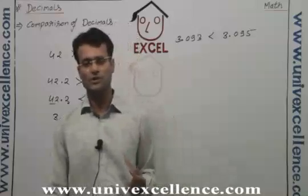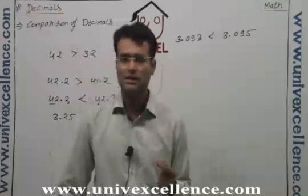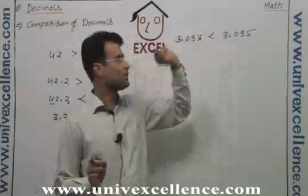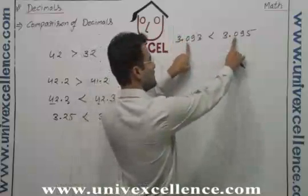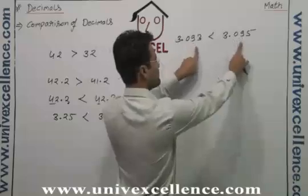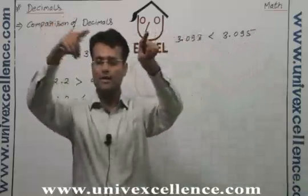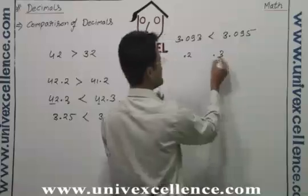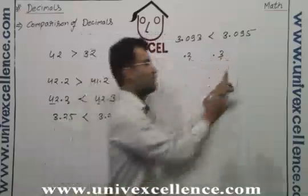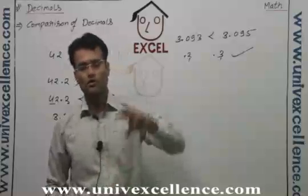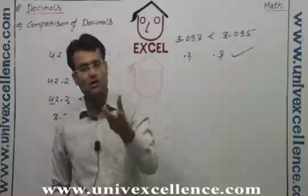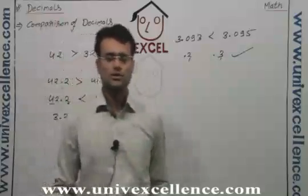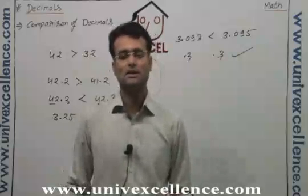So this is a very simple process to compare two decimal numbers. First go to the number before the decimal; if it is equal, see the first number after the decimal. If those are equal, go to the hundredths place; if those are also equal, go to the thousandths place; if those are also equal, go even further beyond. That's a very simple process to compare decimals.